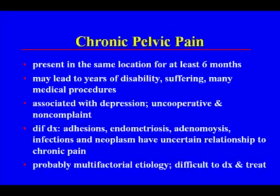Chronic pelvic pain presents in the same location for at least six months. It may lead to years of disability, suffering, and many medical procedures. It's associated with depression, and usually the patient is uncooperative and non-compliant. The differential diagnosis includes adhesions, endometriosis, adenomyosis, infections, and neoplasms, which have an uncertain relationship to the chronic pain. Chronic pain is probably multifactorial, and therefore difficult to diagnose and to treat.